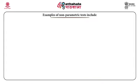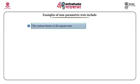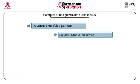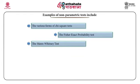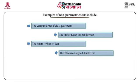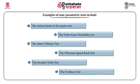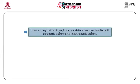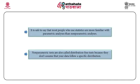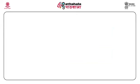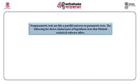Examples of non-parametric tests include the various forms of chi-square tests, the Fisher exact probability test, the Mann-Whitney test, the Wilcoxon signed rank test, the Kruskal-Wallis test, and the Friedman test. It is safe to say that most people who use statistics are more familiar with parametric analysis than non-parametric analysis. Non-parametric tests are also called distribution-free tests because they do not assume that your data follow a specific distribution pattern. Non-parametric tests are like a parallel universe to parametric tests.